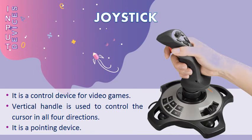Joystick is a control device for playing video games. See the vertical handle in the picture? This handle is used to control your game and can be moved in any direction — left, right, forward, or backward. While playing games, it is used to move the objects in different directions quickly.